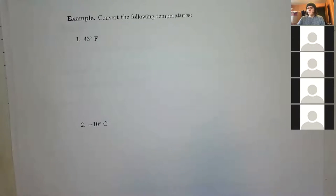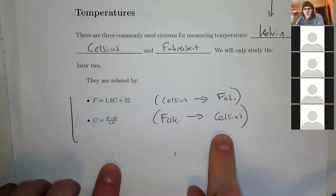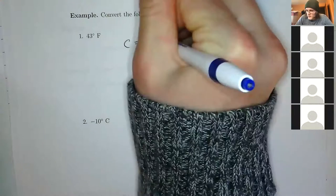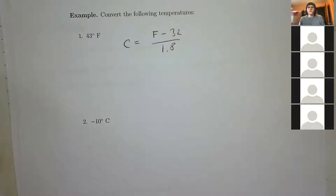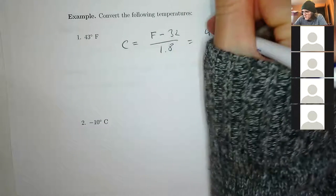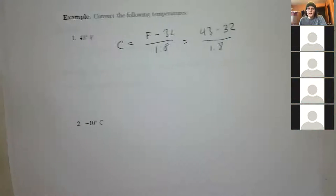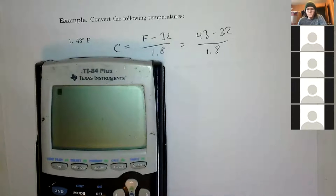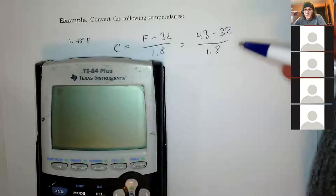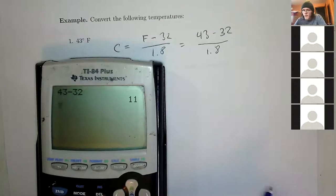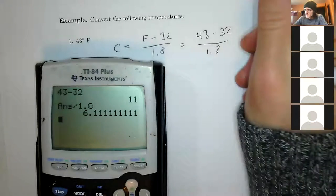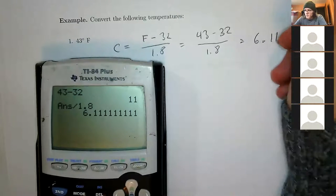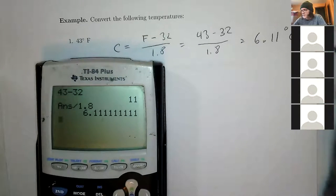Let's convert 43°F into Celsius. Fahrenheit to Celsius is: C = (F − 32) / 1.8. Plug in F = 43: C = (43 − 32) / 1.8. Use a calculator — evaluate the numerator first: 43 minus 32, then divide by 1.8. You get 6.1 repeating, so approximately 6.11 degrees Celsius.